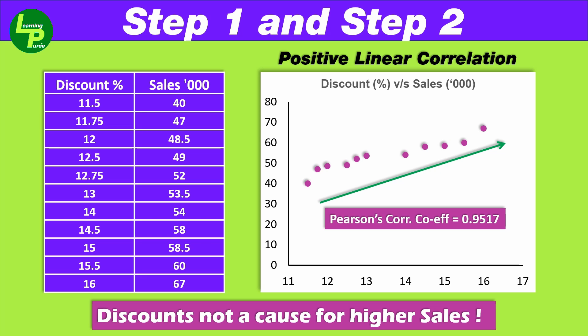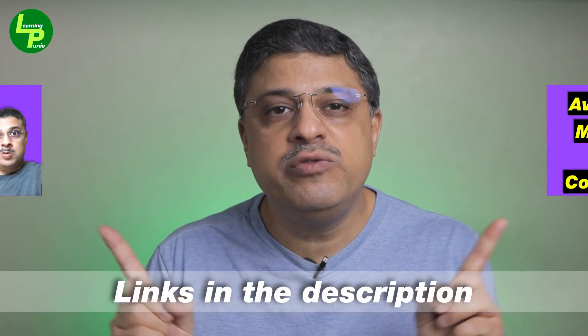This value does not conclude anything beyond the fact that there appears to be a positive linear association between the two variables. Though intuitively it may be true, a positive correlation also does not attribute higher sales as only due to the increase in discounts. To know more about correlation and Pearson's correlation coefficient, you can check out these two videos.